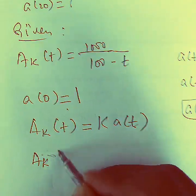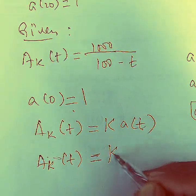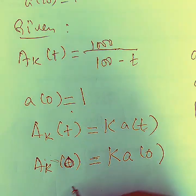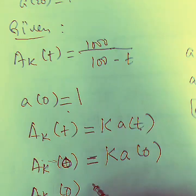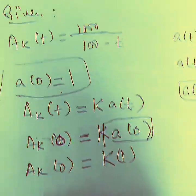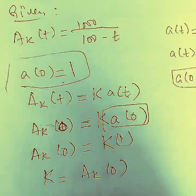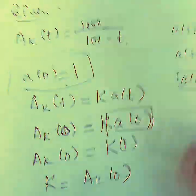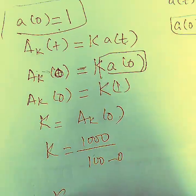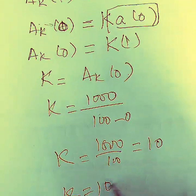We plug in t=0: a(k, 0) = k times a(0), and since a(0) = 1, we get a(k, 0) = k. Substituting into the given formula: k = 1000 / (100 - 0) = 1000 / 100 = 10. So k = 10.